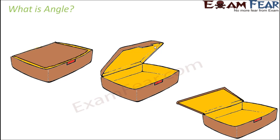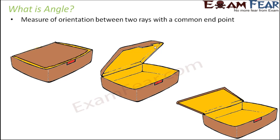Now the next geometrical element we will talk about is angle. What do you see on the screen? You see a box which is initially closed and then gradually getting opened until it is totally open. Angle is nothing but the measure of orientation between two rays with a common endpoint. Do you see any sort of orientation in these diagrams? Initially the lid is closed — the lid and the box were oriented along each other, that's when it was zero. As you gradually open it, there is some orientation between two rays, and this orientation is nothing but the angle.